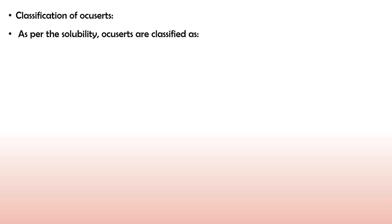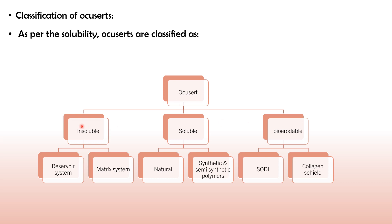As per solubility, Ocuserts are classified as insoluble, soluble, and bioerodible. Insoluble means that once the drug release is complete, you must remove it from the eye cavity. Soluble means there is no need to remove it, as it gets solubilized in the eye. Bioerodible means drug release occurs due to erosion of the polymer membrane. Insoluble Ocuserts are of two types: reservoir system and matrix system. Soluble ones depend on whether a natural, synthetic, or semi-synthetic polymer is used. Bioerodible types include SODI and collagen shield.